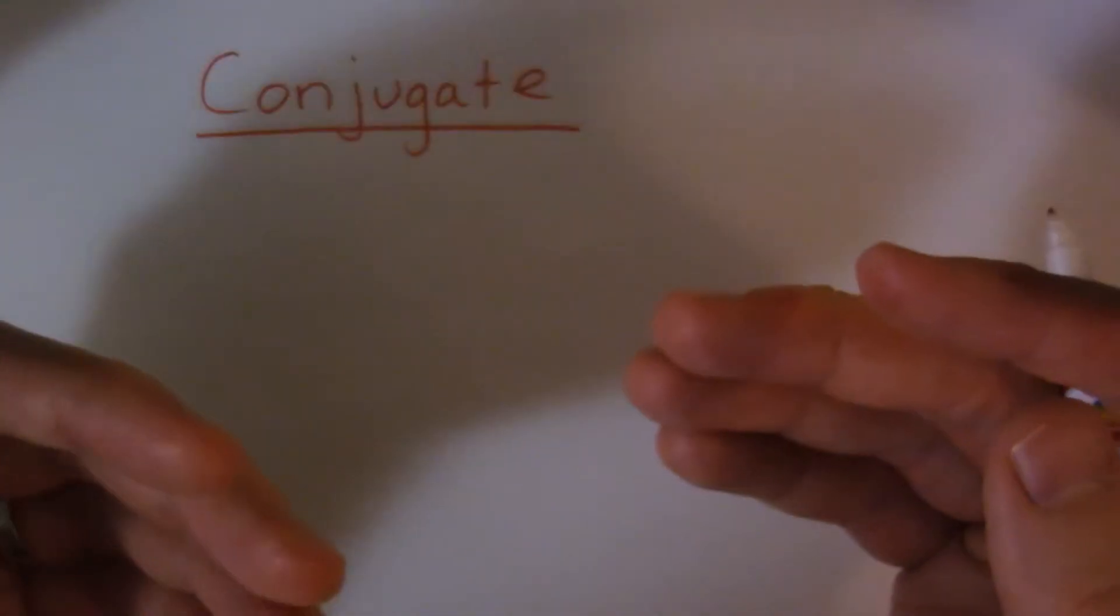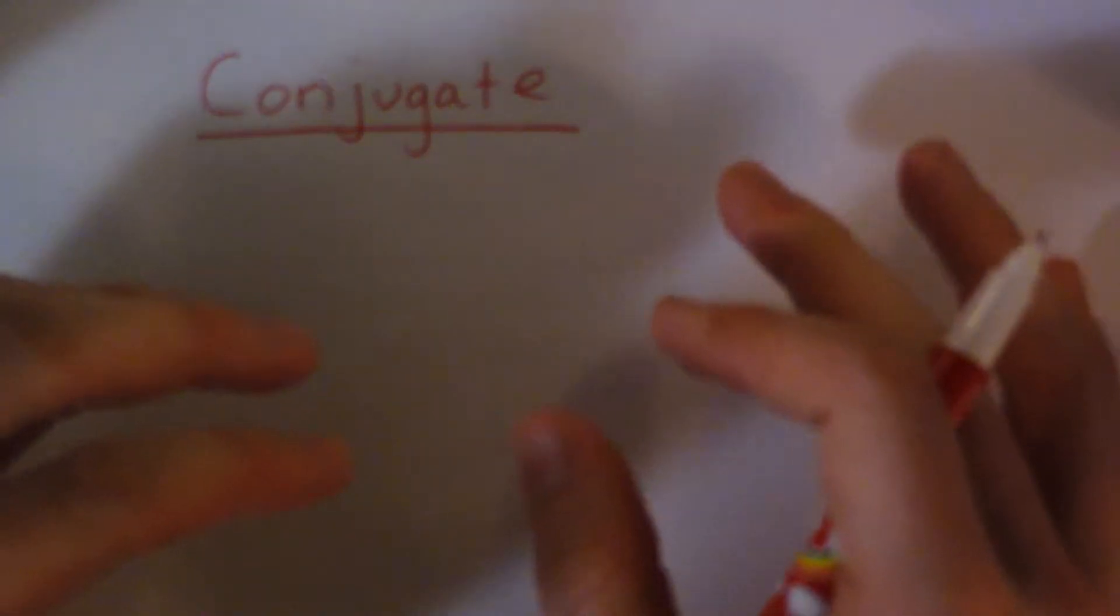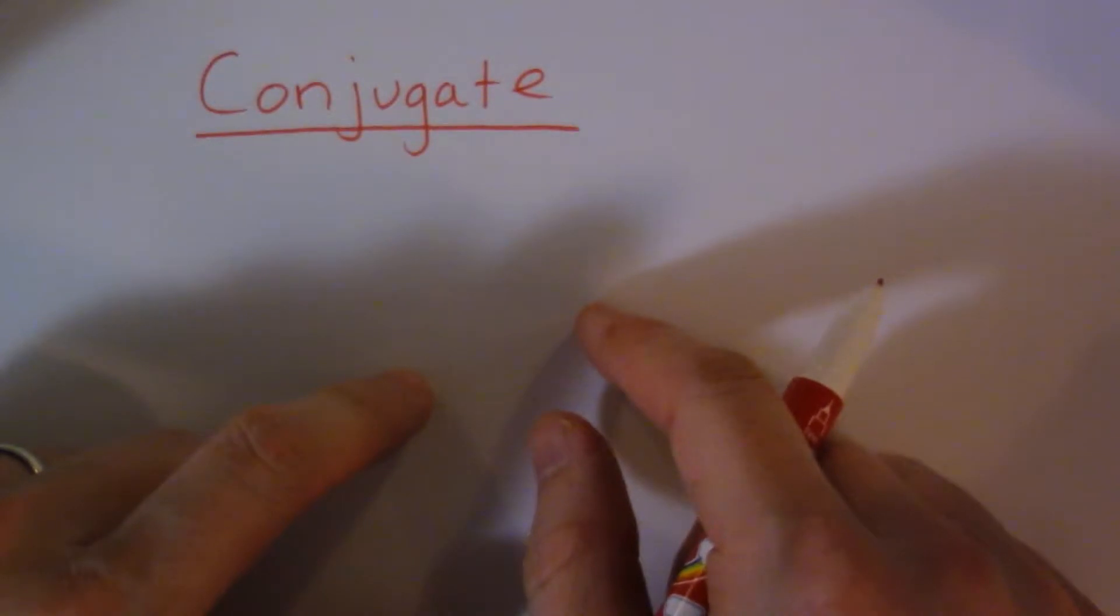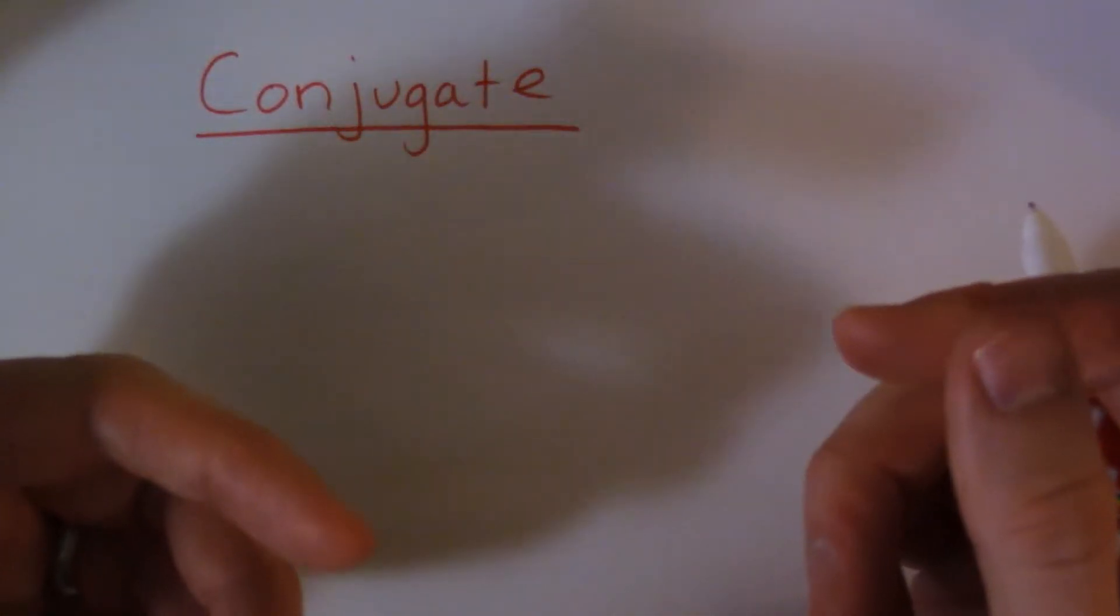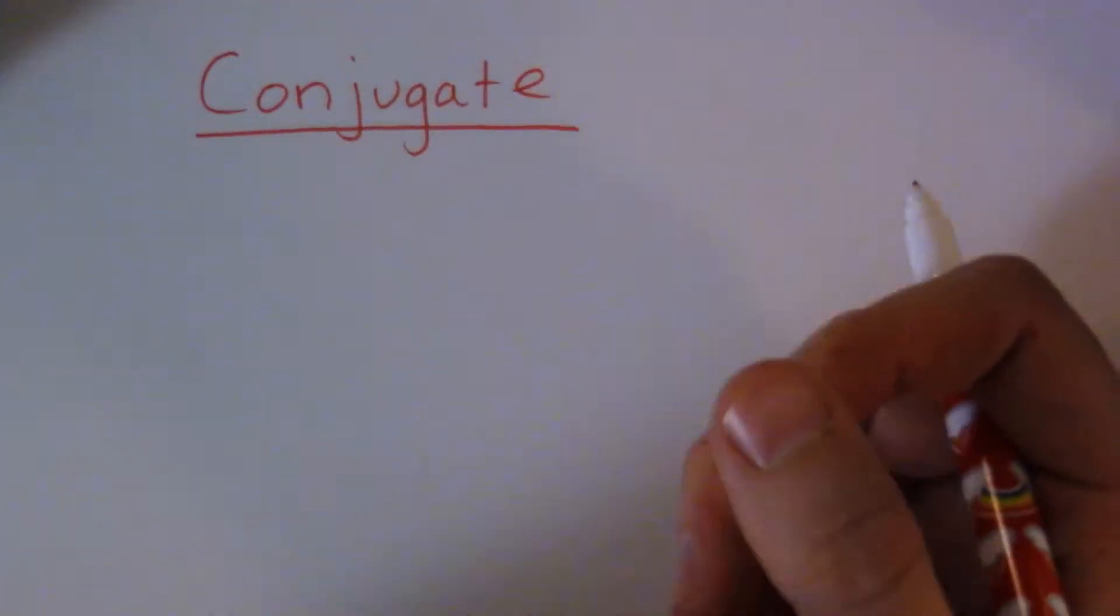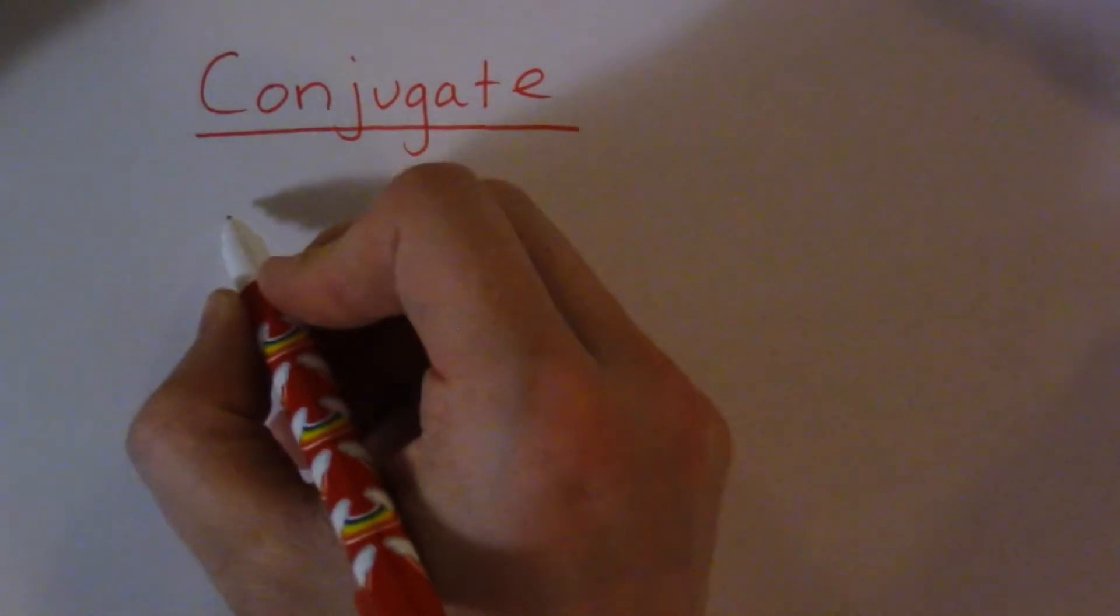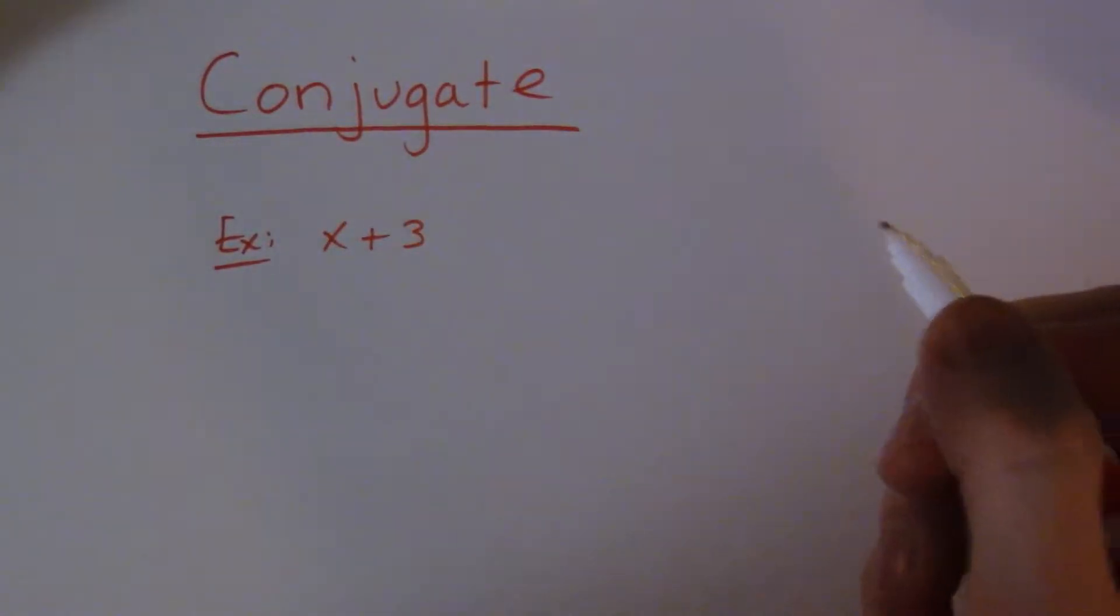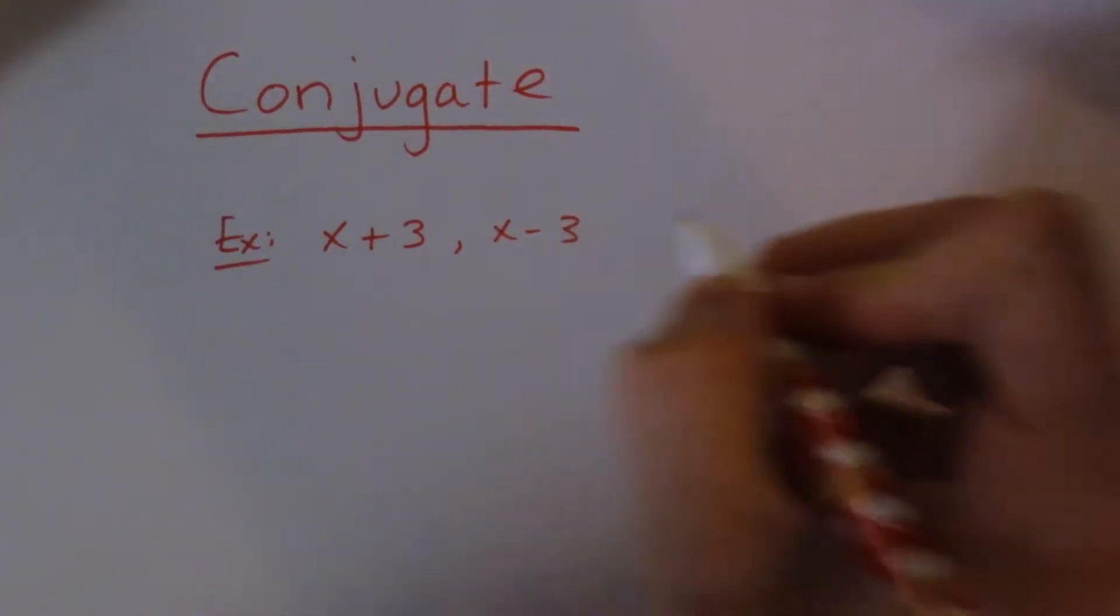So the conjugate is a very useful idea in pre-calculus and calculus. Essentially, what the conjugate is, is when you change the sign between two terms. So let me give you an example. If you have x plus 3, the conjugate of x plus 3 is actually x minus 3.